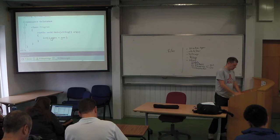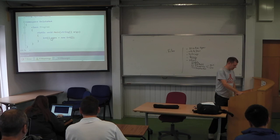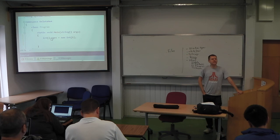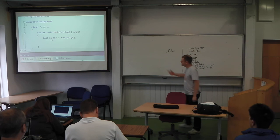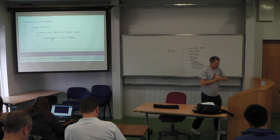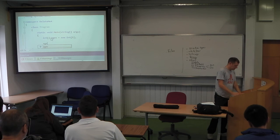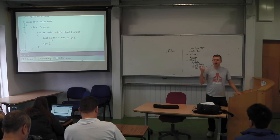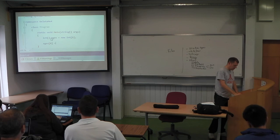In C# you go: `int[] ages = new int[5]`. That's the ages array — it's an array of integers because you've got int, open square bracket, closed square bracket. That's how you make an array of five integers. To populate it, you use square brackets just like in C. The elements go from zero to four, so you can go `ages[0] = 19`.